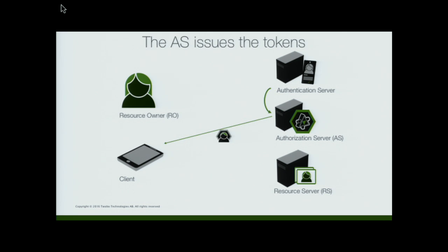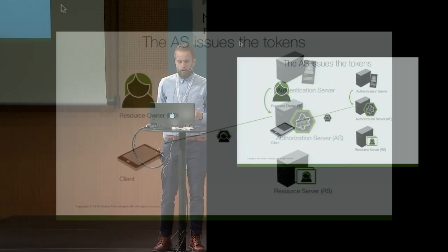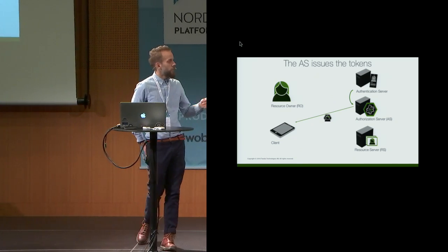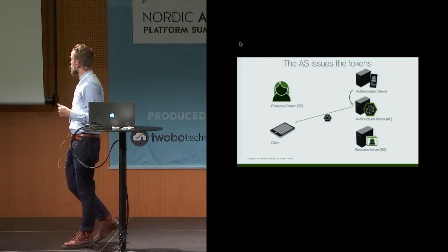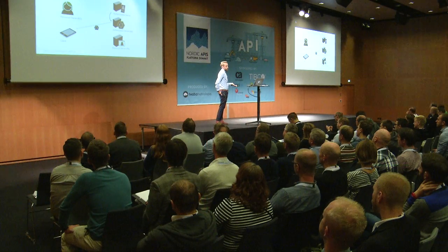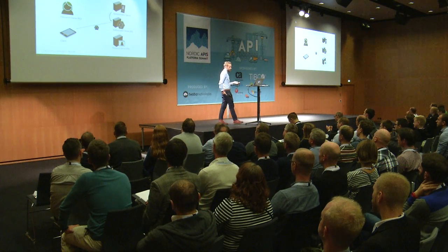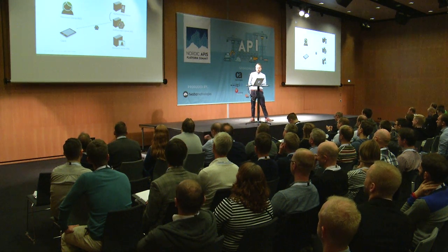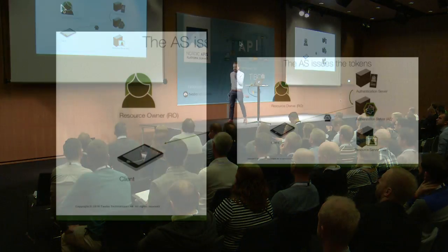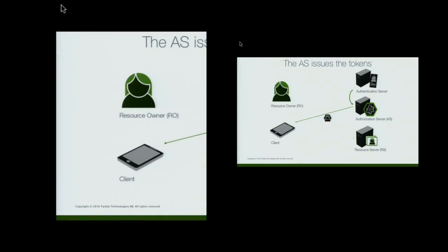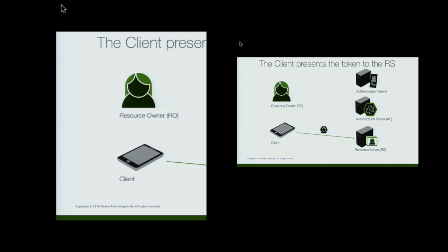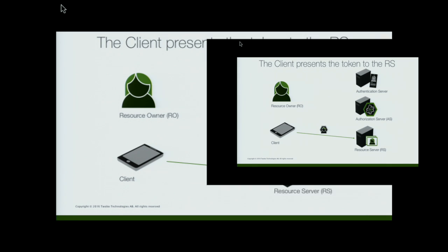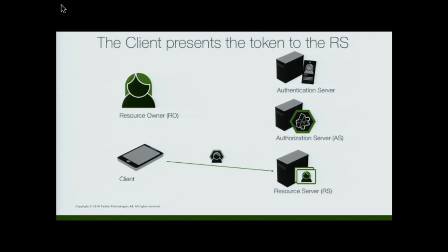When that's done, the authentication service turns around and says yeah, that was a successful authentication. The user is Jacob, and you can go ahead and do whatever you want, Mr. Authorization Server. And the AS, as we call that, issues an OAuth token. It's actually a flow called the implicit flow in OAuth. There are more advanced flows, and we'll go into those. But this access token can now be used to contact the API. It's sort of the contained identity and access information that was just authorized and delegated by the authorization server.